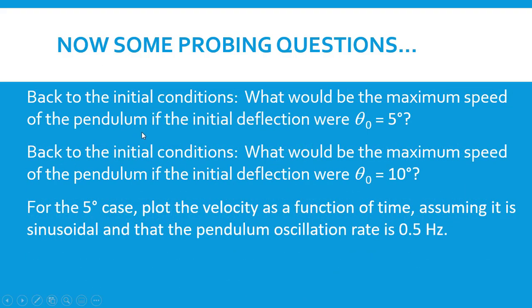Let's go back to the initial conditions. What would be the maximum speed of the pendulum if the initial deflection were five degrees? Back to the initial conditions again. What would be the maximum speed of the pendulum if the initial deflection were ten degrees? Is the maximum speed of the ten-degree pendulum twice the maximum speed of the five-degree pendulum? And then, for the five-degree case, plot the velocity as a function of time, assuming it is sinusoidal and that the pendulum oscillation rate is 0.5 hertz.